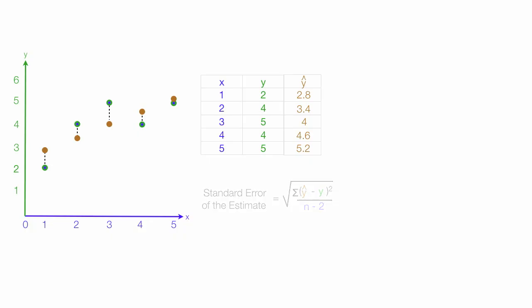It appears more daunting than it is, but let me walk you through it. So I take the estimated value minus the y value, estimated minus the actual. So the first one is 2.8 minus 2, which is 0.8.